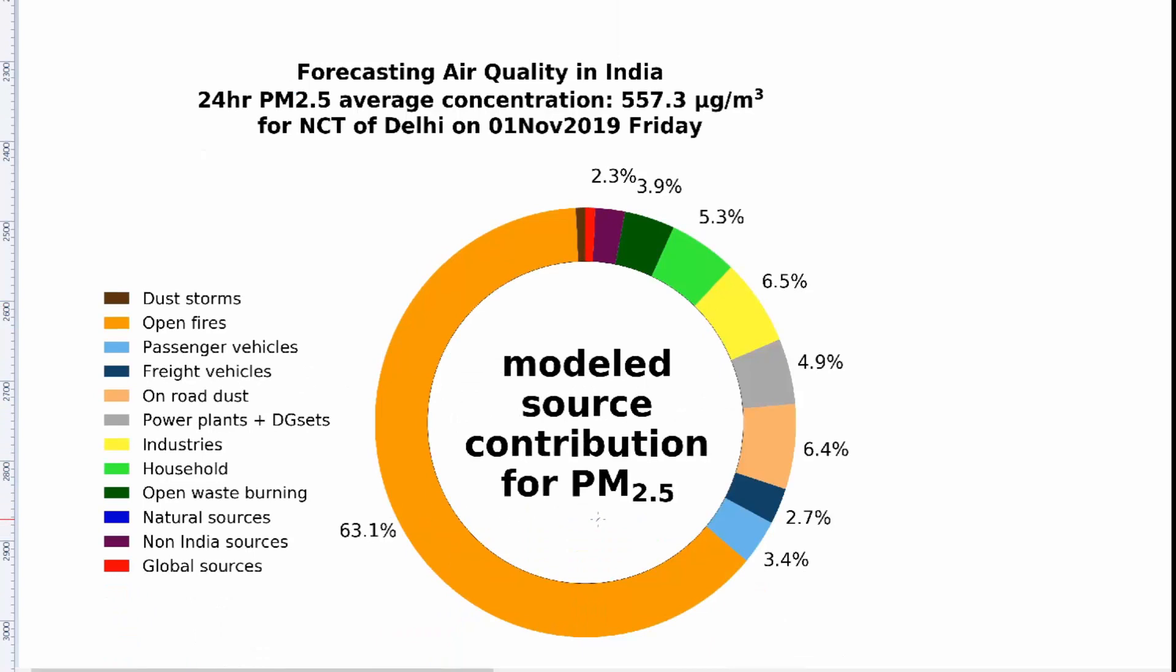There are different sources which contribute to the concentration of PM 2.5 in the air. These are dust storms, open fires, passenger vehicles, freight vehicles, on-road dust, power plants, DG sets, industries, household, open waste burning, natural sources, non-India sources and global sources. Among all these, open fires alone contribute to 63.1% in PM 2.5.